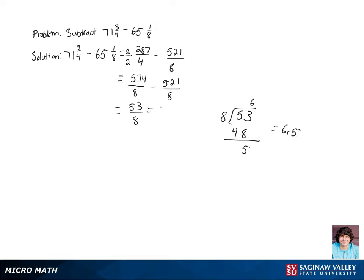So our answer to the long division is 6 remainder 5, so we rewrite this improper fraction as 6 and 5 eighths, which is our final answer.